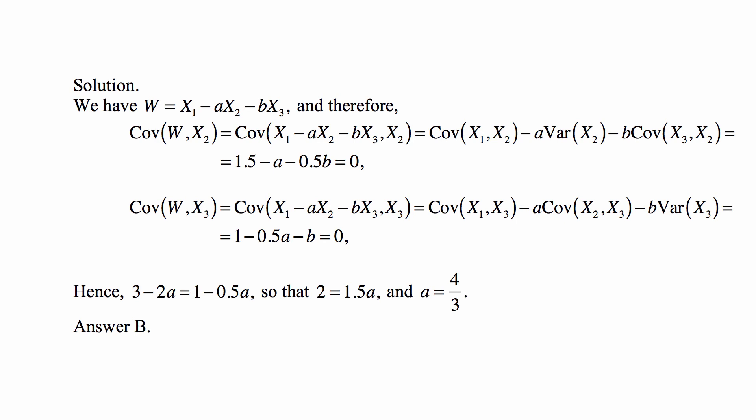Covariance of W and X3 also is supposed to be 0, but that's covariance of X1 minus AX2 minus BX3 with X3, which we then rewrite as covariance of X1 and X3 minus A times covariance of X2 with X3 minus B times covariance of X3 with X3, which is variance of X3. So this becomes 1 minus 0.5 A minus B when we plug in the known values of these covariance and variance that we get from the variance covariance matrix.